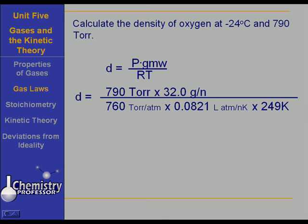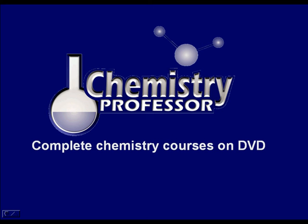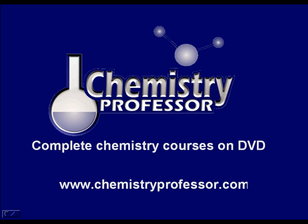The 249 K comes from 273 minus 24 degrees Celsius. Working this out, the units of torr cancel, moles cancel, atmospheres cancel, and Kelvins cancel. The density comes out to be 1.63 grams per liter. Very straightforward and direct. It makes sense: given the lower temperature and the higher pressure, the density of oxygen would be greater than you would expect at STP.